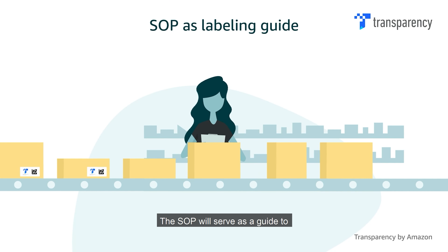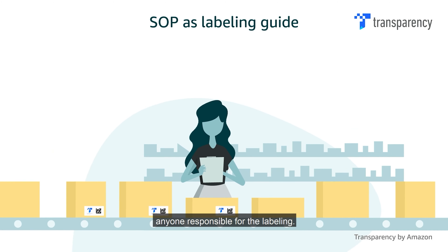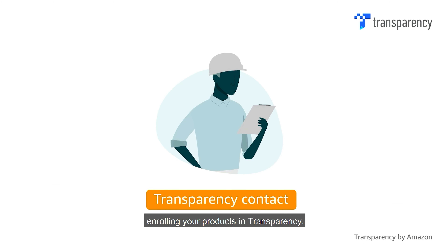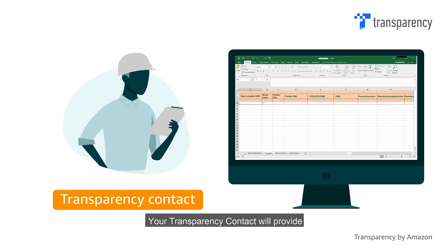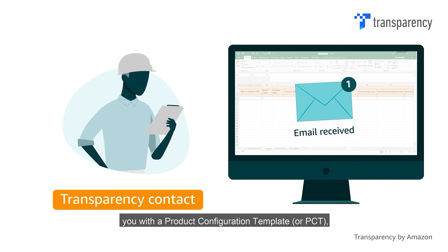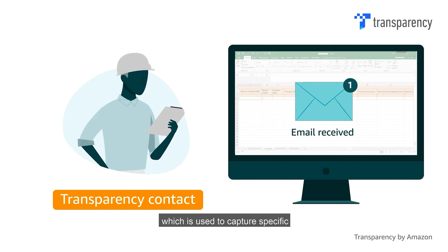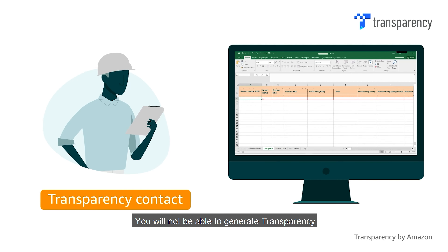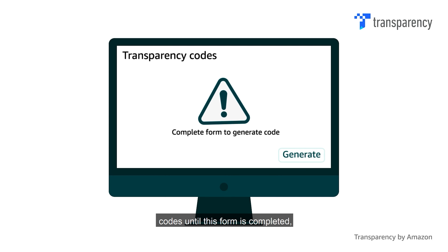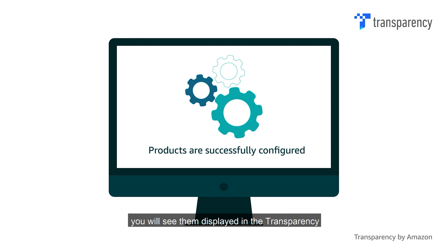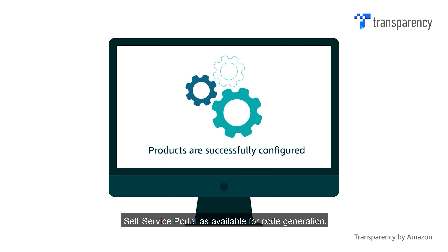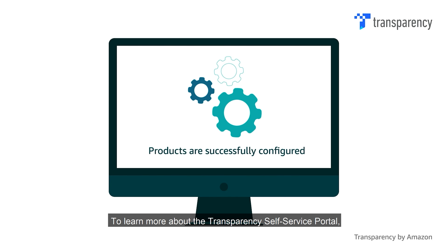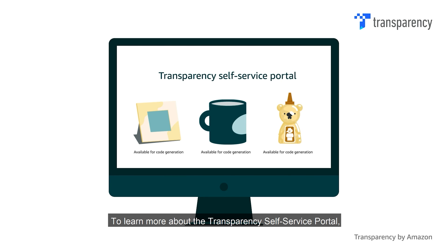The SOP will serve as a guide to anyone responsible for the labelling. Let's expand on the first step: enrolling your products in Transparency. Your Transparency contact will provide you with a Product Configuration Template, or PCT, which is used to capture specific product details required for enrolment. You will not be able to generate Transparency codes until this form is completed and your products are successfully configured. Once your products are set up, you will see them displayed in the Transparency Self Service Portal as available for code generation.